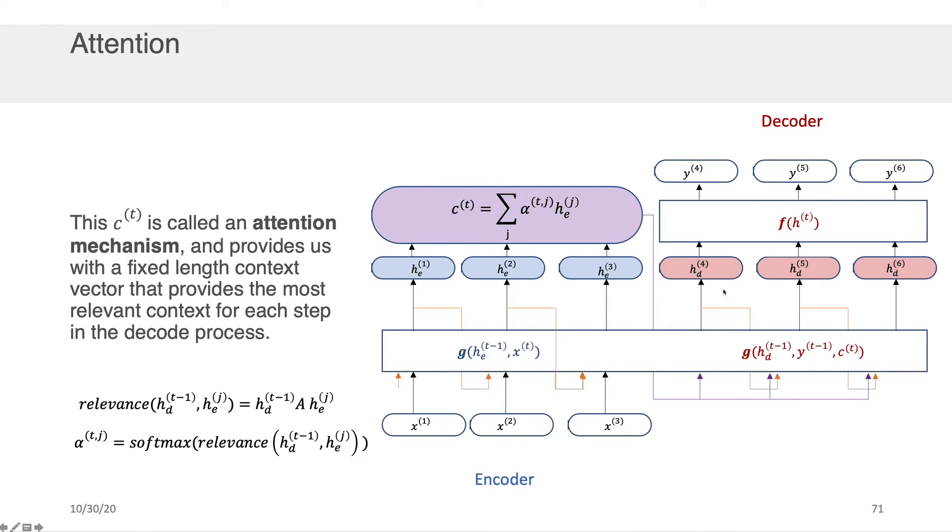Now this idea of not limiting ourselves just to the value here at the end as the context, but allowing the context to change as a function of where we are in this decode process, this is called an attention mechanism. Why is it called attention? Because it basically tells us when we're performing the decode operation what to pay attention to in the encoder part of the sequence.